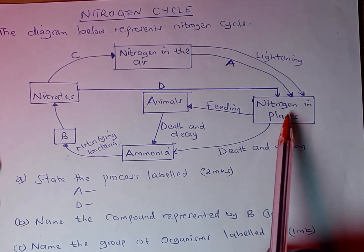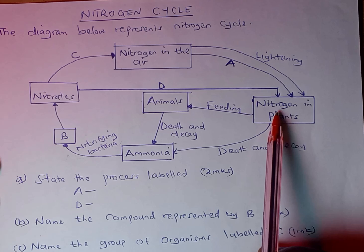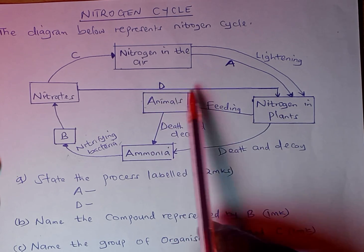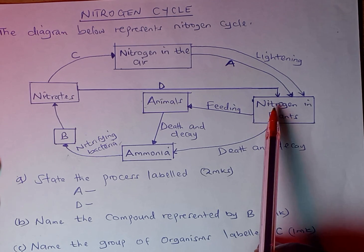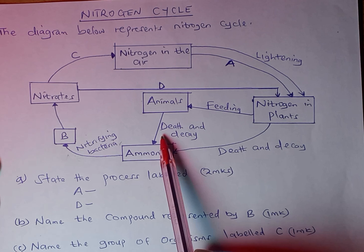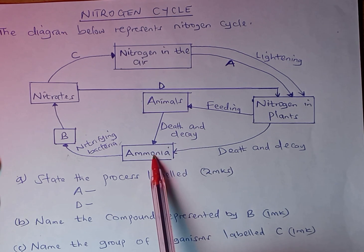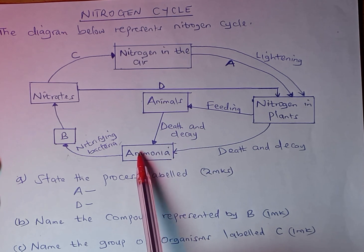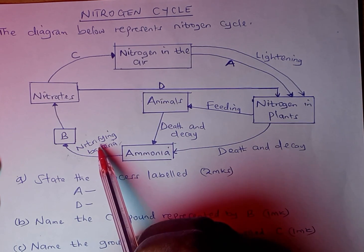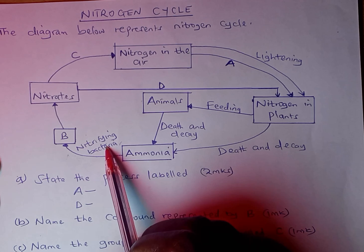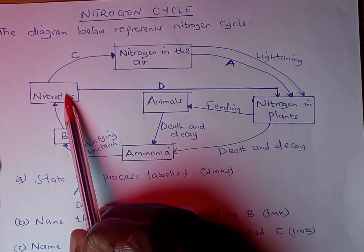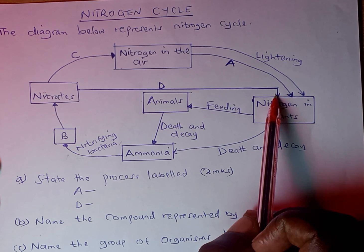Once nitrogen is fixed in the soil, it is converted into plant proteins. Animals that do not make their own food will obtain plant proteins or nitrogen through feeding. When animals die, their bodies are decomposed through death and decay into ammonia. Then ammonia is converted into nitrites through nitrifying bacteria.